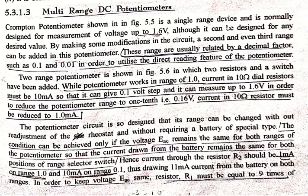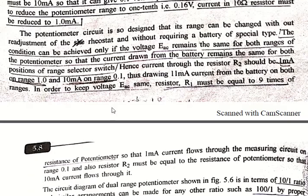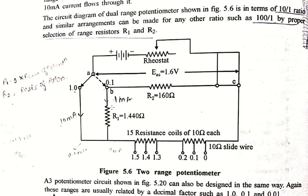These ranges are usually related by decimal factors such as 0.1, 0.01 in order to utilize the direct reading feature of the potentiometer. Now looking at the constructional diagram of a two-range DC potentiometer.